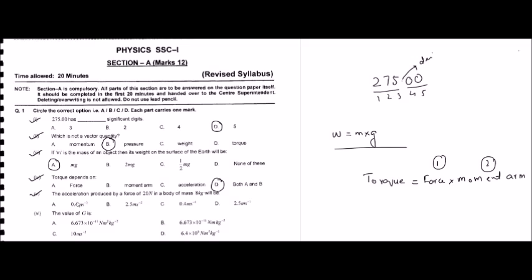Question number five: the acceleration produced by a force of 20 newtons in a body of mass 8 kilograms will be? Options are: A — 0.4 m/s², B — 2.5 m/s², C — 0.5 m/s, D — 2.5 m/s. The mass is 8 kg and the applied force is 20 newtons. By Newton's second law of motion, force equals mass times acceleration.